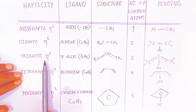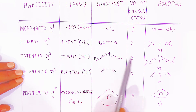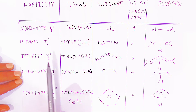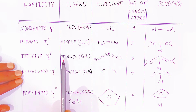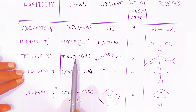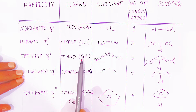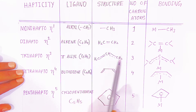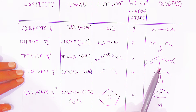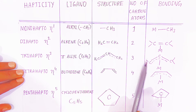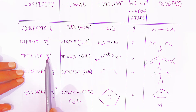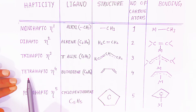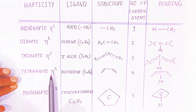The third type is the tri hapto ligand. It is called tri hapto because three carbons are involved in bonding with the metal. The well-known example is pi allyl, with formula C₃H₅. Three carbon atoms are bonded to the metal, making it a tri hapto ligand.